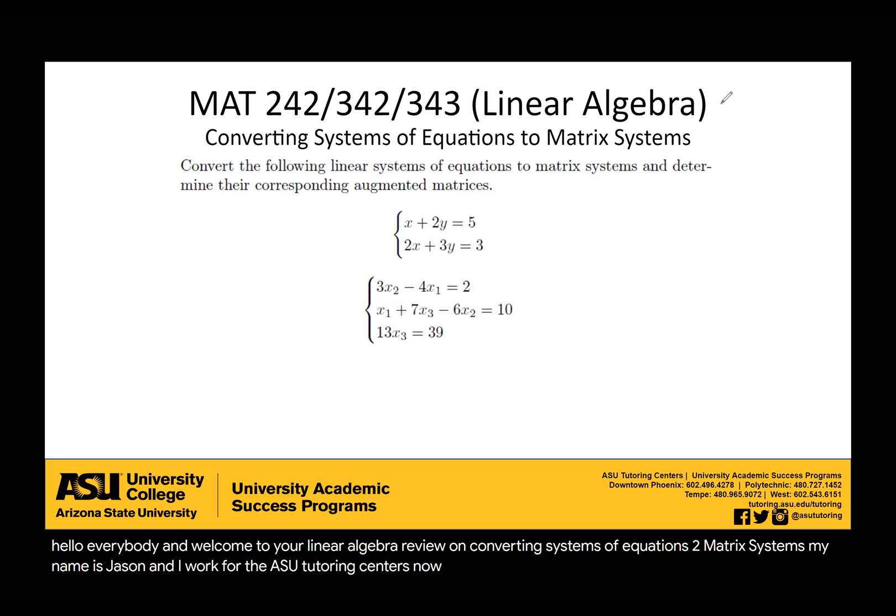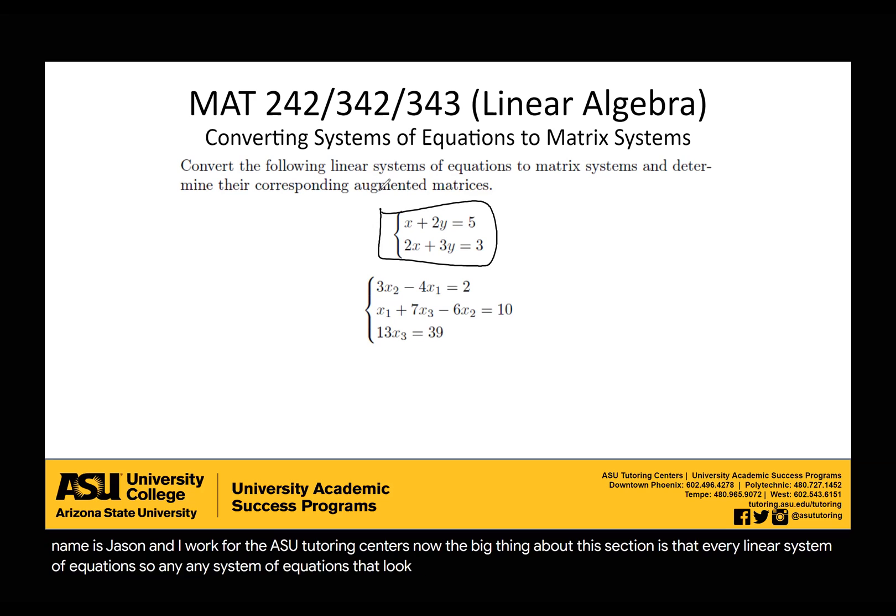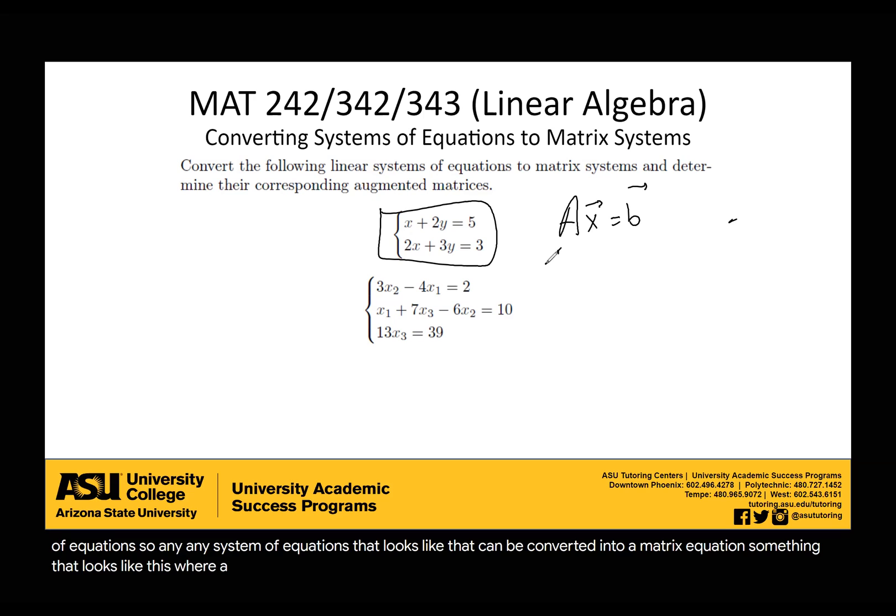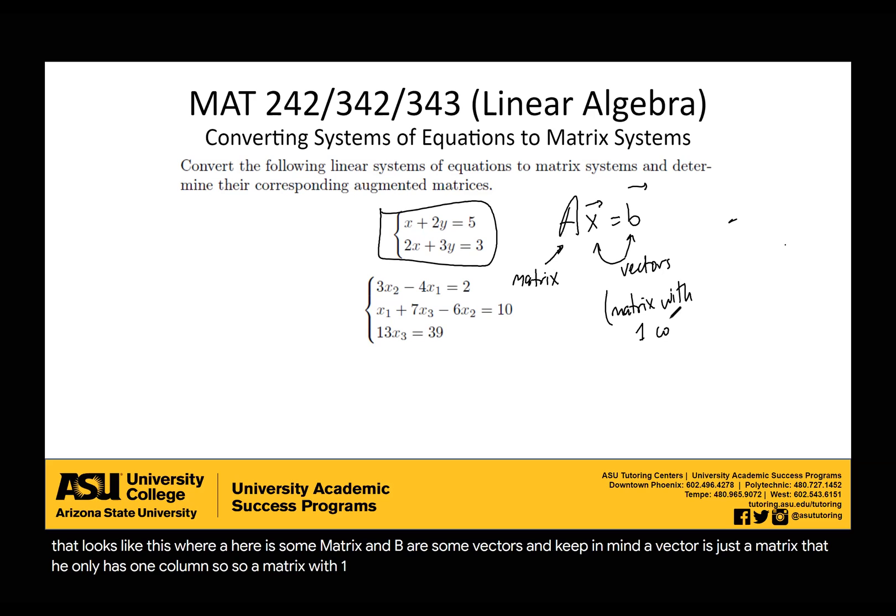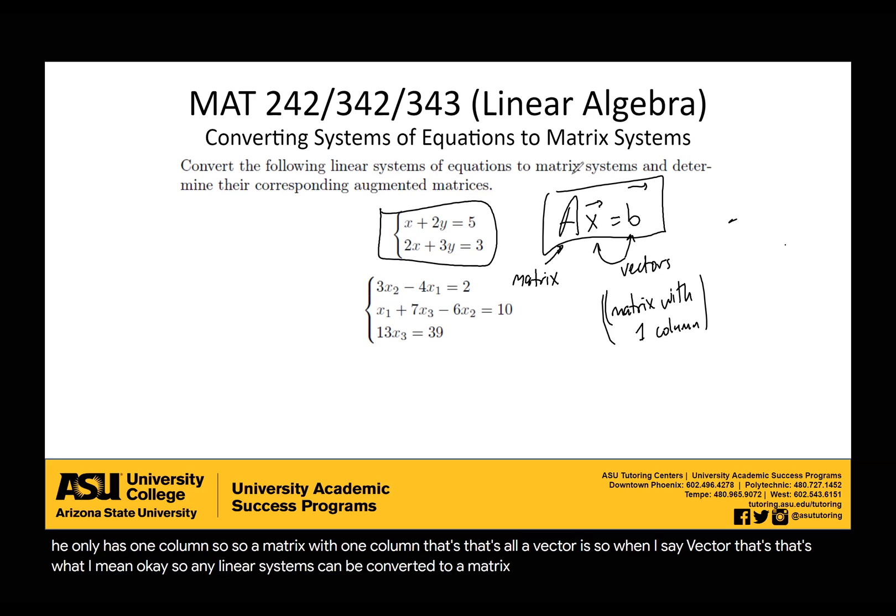Now the big thing about this section is that every linear system of equations can be converted into a matrix equation, something that looks like Ax = B, where A is some matrix and x and b are some vectors. Keep in mind a vector is just a matrix that only has one column. So any linear system can be converted to a matrix equation that looks like this.